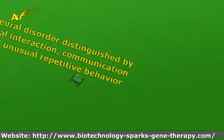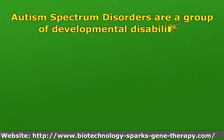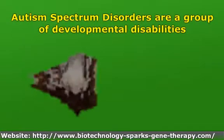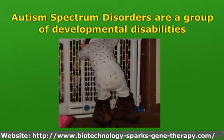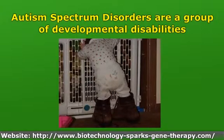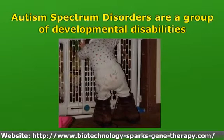Autism spectrum disorders (ASDs) are a group of developmental disabilities that can cause significant social, communication, and behavioral challenges. People with ASDs handle information in their brain differently than people without it, and ASDs affect each person in different ways, ranging from very mild to severe.